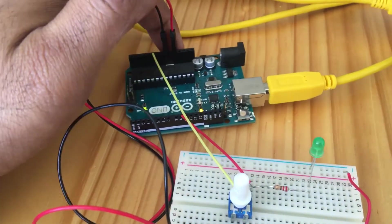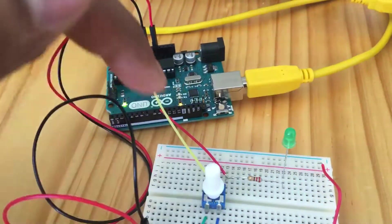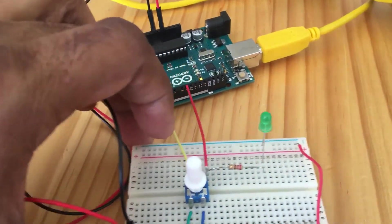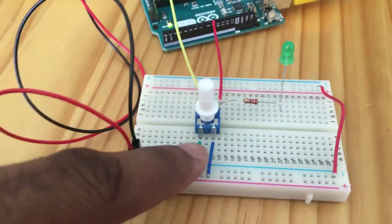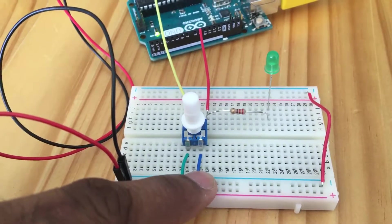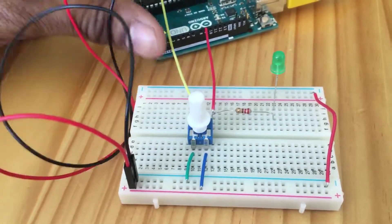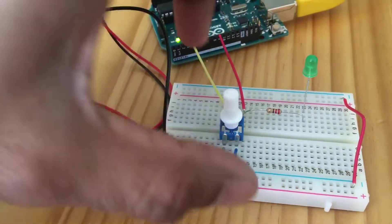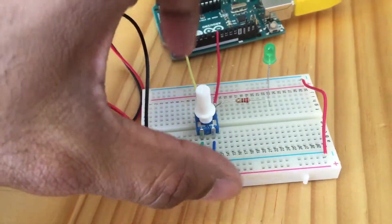The power and ground cables are connected over here. There are three points on the potentiometer: one connects to ground, one connects to power, and the other connects to analog zero. This wire connects my LED to pin 9.